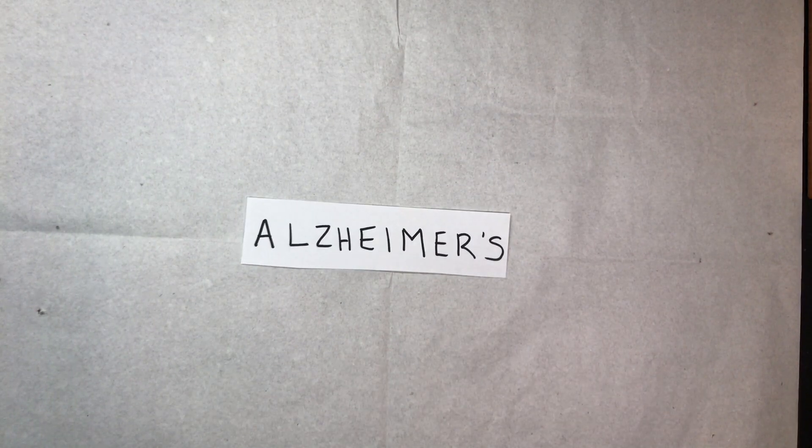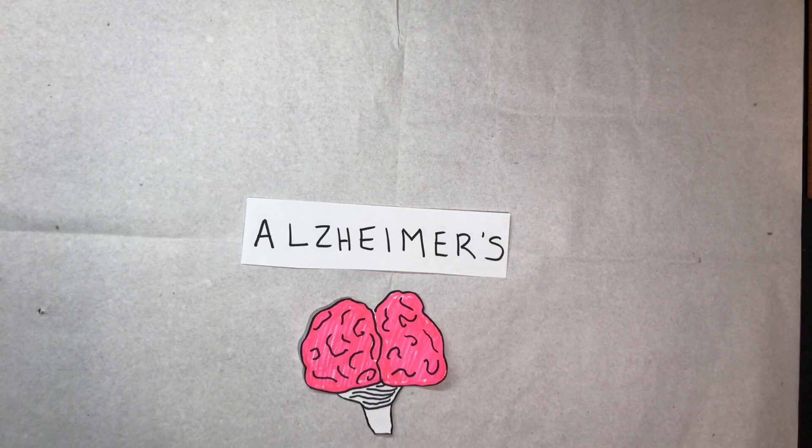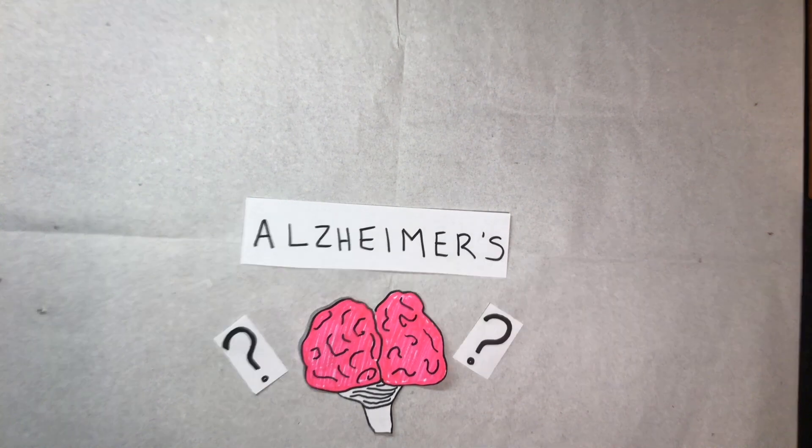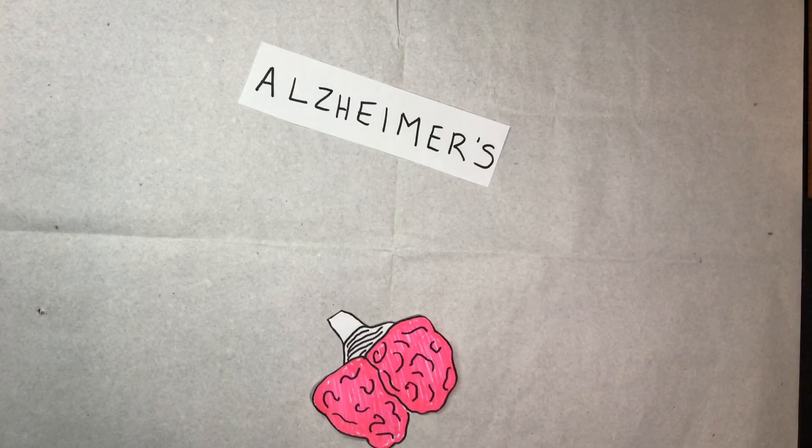Many of you may know of Alzheimer's as a disease that affects the brain, leading to severe dementia. However, a more in-depth view at the disease reveals physical changes in the brain that lead to this inability to remember information.